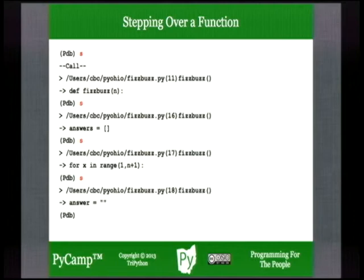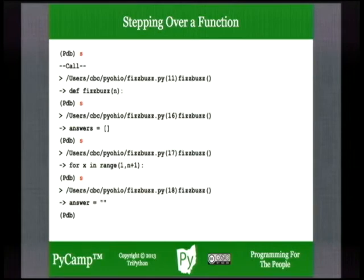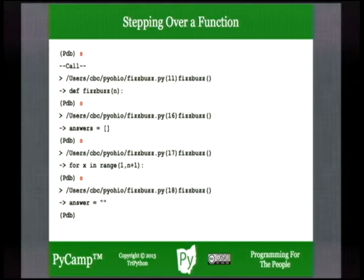Instead of using 'n' to step past the function, let's step back into it with 's' and step through to the line where we bind the identifier 'answer' to an empty string. We could be about to do a lot of tedious debugging inside this function that we already know works. So if you accidentally start single-stepping and get stuck inside a function, and you don't want to continue running to the next breakpoint — 'r' (return) is there. It happens a lot — we're all human.